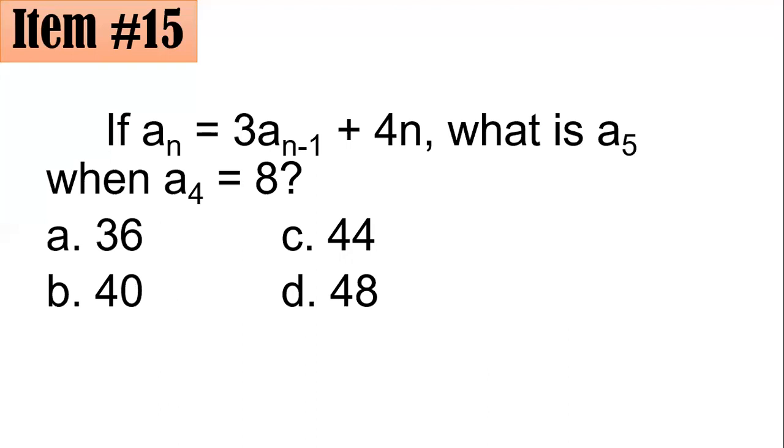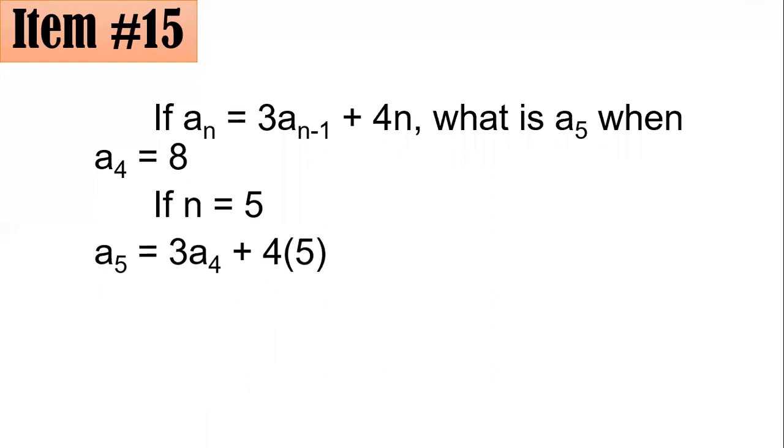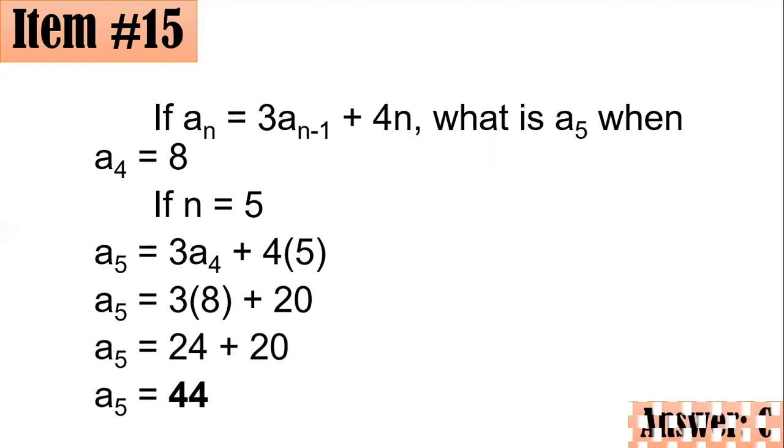Number 15. If a_n = 3(a_{n-1}) + 4n, what is a_5 when a_4 is 8? Is it 36, 40, 44, or 48? We'll see. So with n = 5, we have a_5 = 3(a_4) + 4(5). But since a_4 is 8, so I will substitute this a_4 with 8. Hence, a_5 = 3(8) + 20, which is 44, letter C.